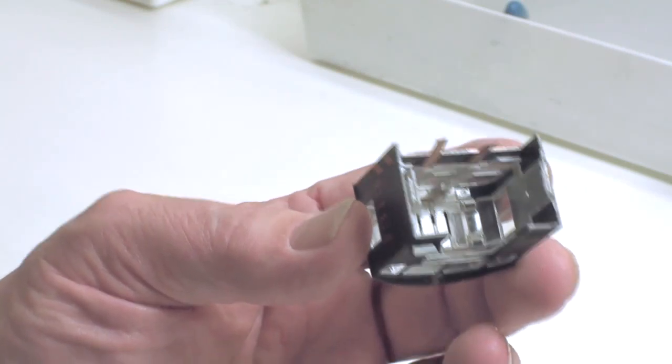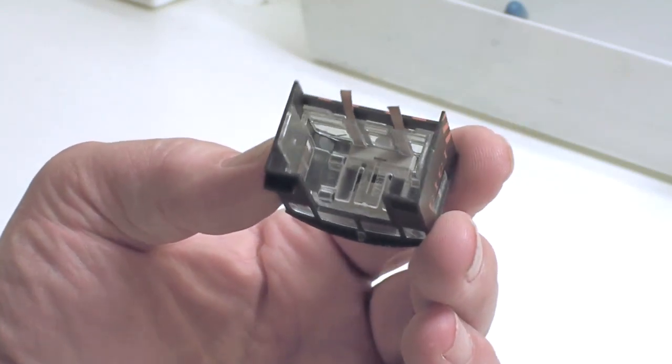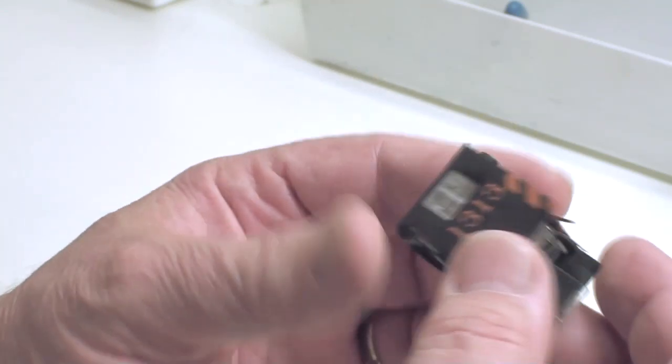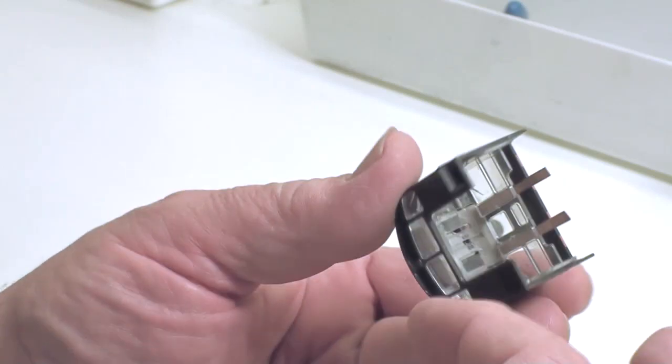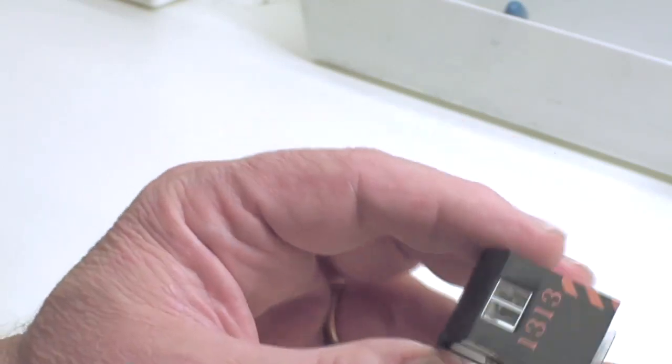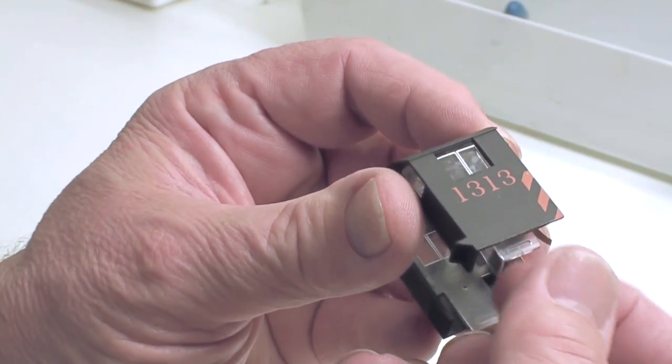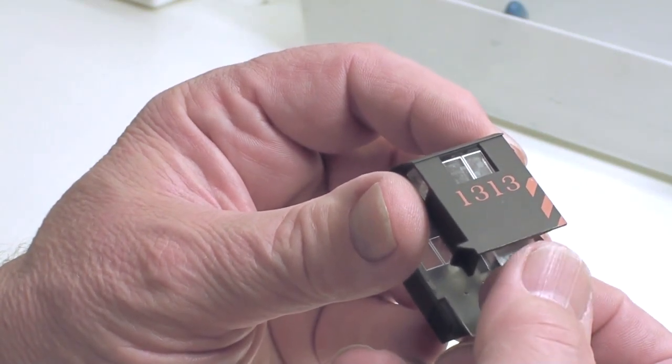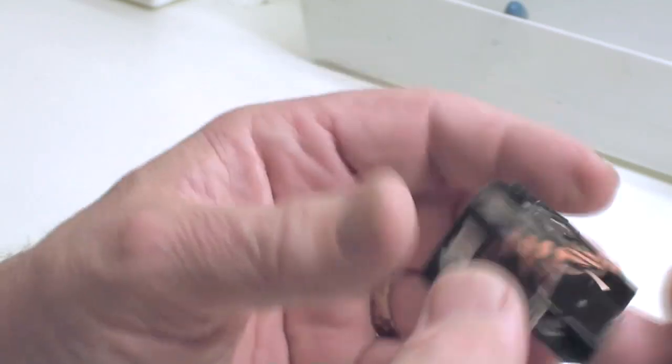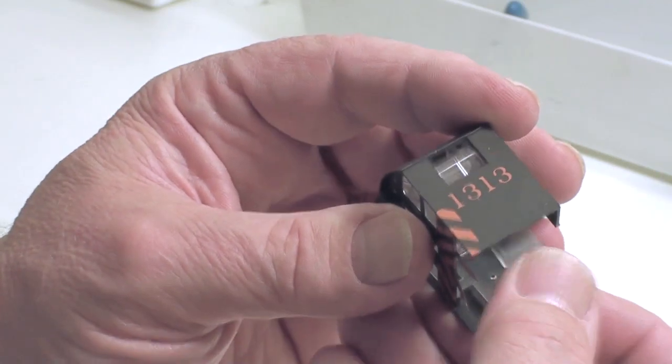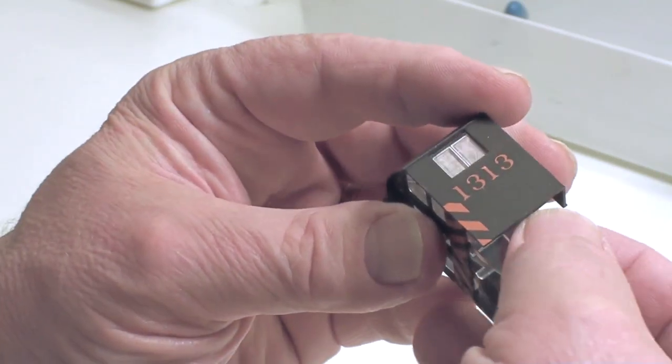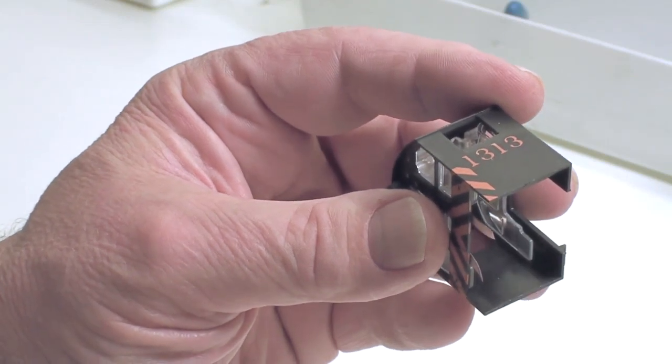The side windows are the key to this whole snap together assembly. It's really very ingeniously designed. Now to get the front and rear windows and the side windows out, the key is that the side windows slide down into their frame. Just a little pressure on the bottom of the tab that you used to take this out of the shell, and they pop out of the frame, and then you can remove the whole assembly intact.